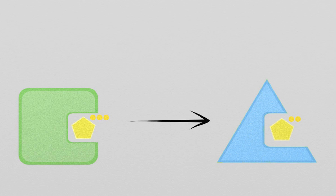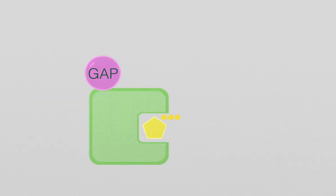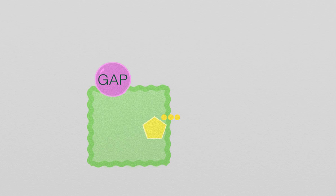This switching is often controlled by accessory proteins such as GAP and GEF. GAP binding triggers an active GTPase to hydrolyze GTP to GDP, switching it to an inactive state.